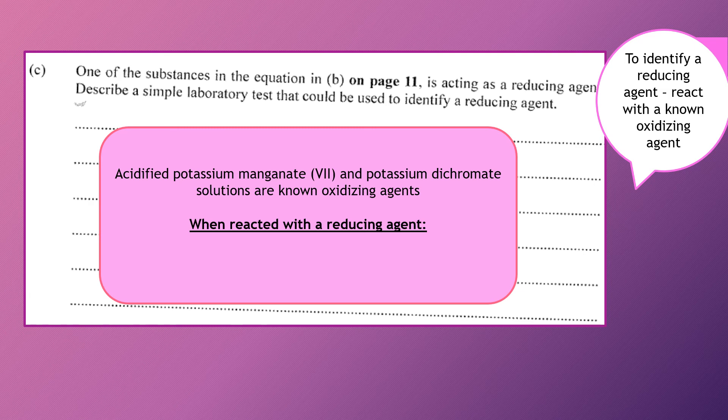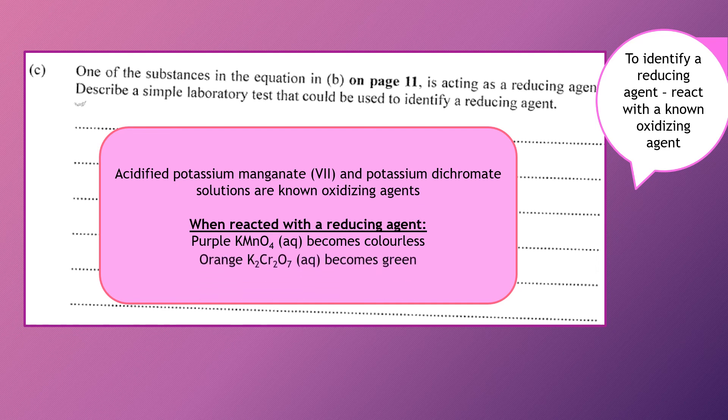So when it is acting now as an oxidizing agent and reacting with a reducing agent, we would expect to see a color change from purple to colorless. Beautiful. What about our potassium dichromate solution? What's that color? The usual color there is orange. And so when it is reacting with a reducing agent, we expect to see a change from orange to green. Great.